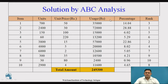The next step is to find what percentage each item's cost is of the total 2,49,300. It is obtained that 35,000 is 14.04% of the total amount. Similarly, 72,000 is 28.88% of the total amount. We identify all percentages with respect to the total amount for the respective items.